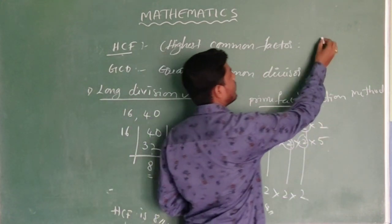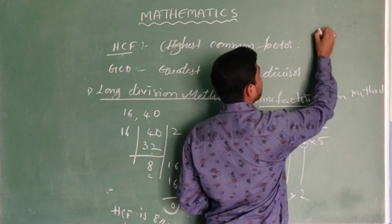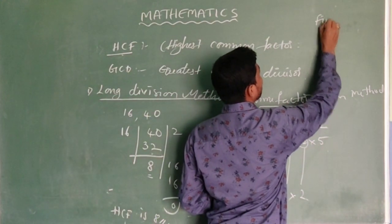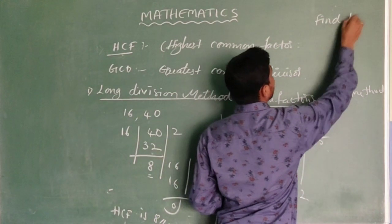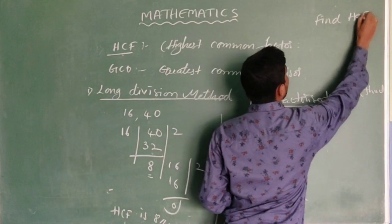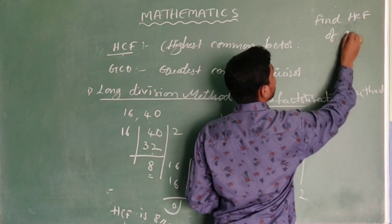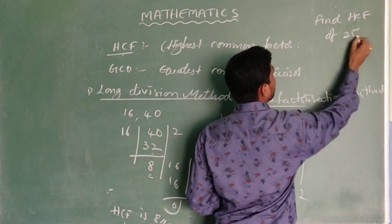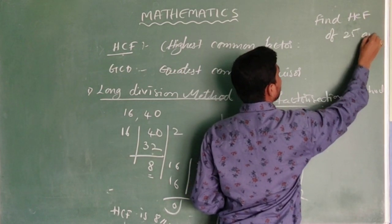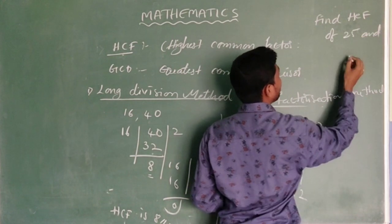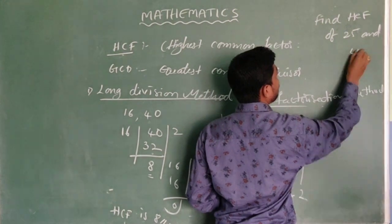You can work out this problem: find the HCF of 25 and 45.